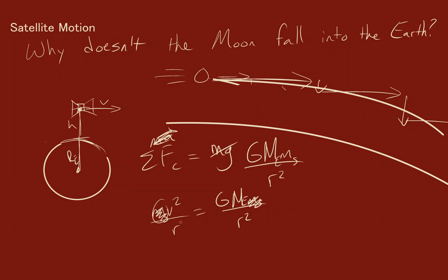So the speed we would want would be root G mass of the planet times how far away we are. Well, we'd have the r on top here because we multiply both sides by r, so this is actually not r².